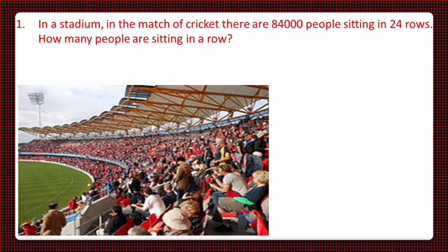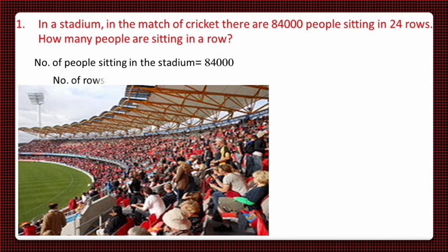First of all, we'll write the number of people sitting in the stadium, which is 84,000. The number of rows in the stadium is 24. In the stadium, 24 rows are arranged in circular form and 84,000 people are sitting in them, meaning 84,000 people are equally divided in 24 rows, and we have to find the number of people in each row. For that, we'll divide 84,000 by 24.